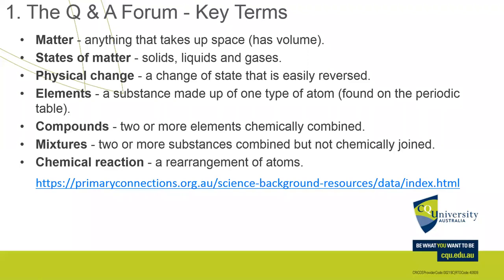Chemical sciences — I know that's a gross simplification — but if you understand and have a working definition of matter, that matter constitutes at least three different states, that it can be physically changed, broken down into elements (we've got 118 on the periodic table), a substance can be made up of one particular type of atom, atoms can combine to become compounds or mixtures, and a chemical reaction is a rearrangement of atoms — if we work on those seven definitions we really have the whole chemical sciences agenda nailed.